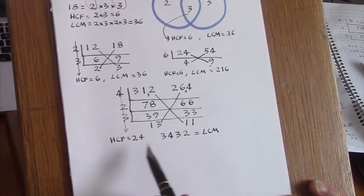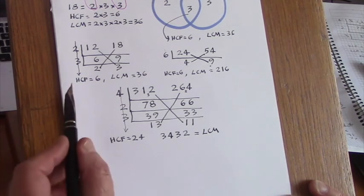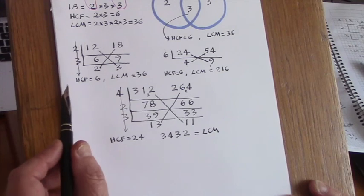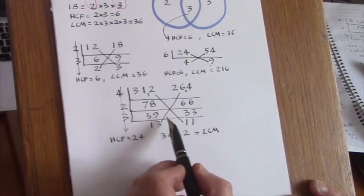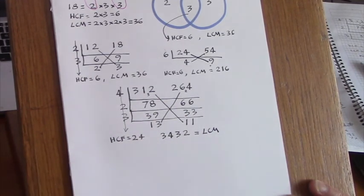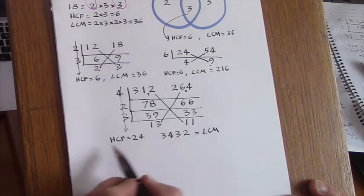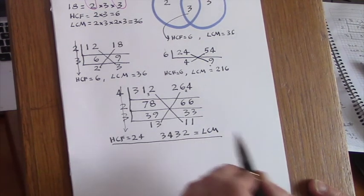Of the various ways in which I've seen HCFs and LCMs obtained with simple arithmetic, I have found this vertical and crosswise method to be the most efficient and the fastest way. So there we have it.